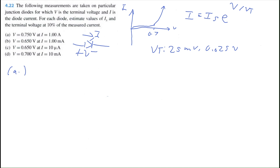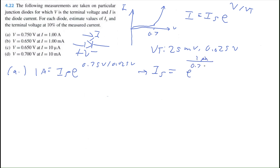Using that information, we can find IS for part A. We know I equals 1 amp, and we're solving for IS: 1 amp equals IS times e to the power of 0.75 volts divided by 0.025 volts. Dividing the exponential to the left side, IS equals 1 amp divided by e to the power of 0.75 divided by 0.025, which gives IS equal to 1.069 times 10 to the negative 13 amps.